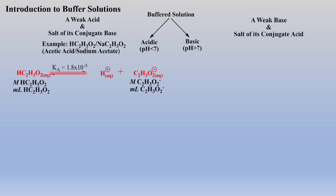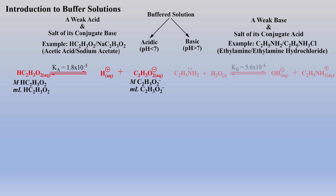A basic buffer solution is made with a weak base and the salt of its conjugate acid. For example, ethylamine and ethylamine hydrochloride. Ethylamine is a weak base as indicated by the small Kb value, and we will most likely be given a volume and molarity of the weak base within some problem.